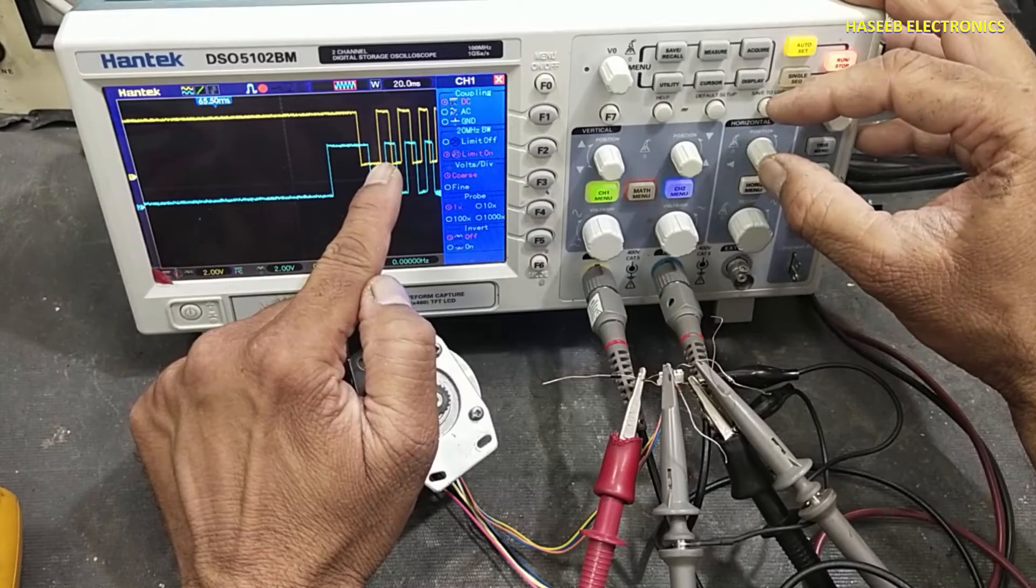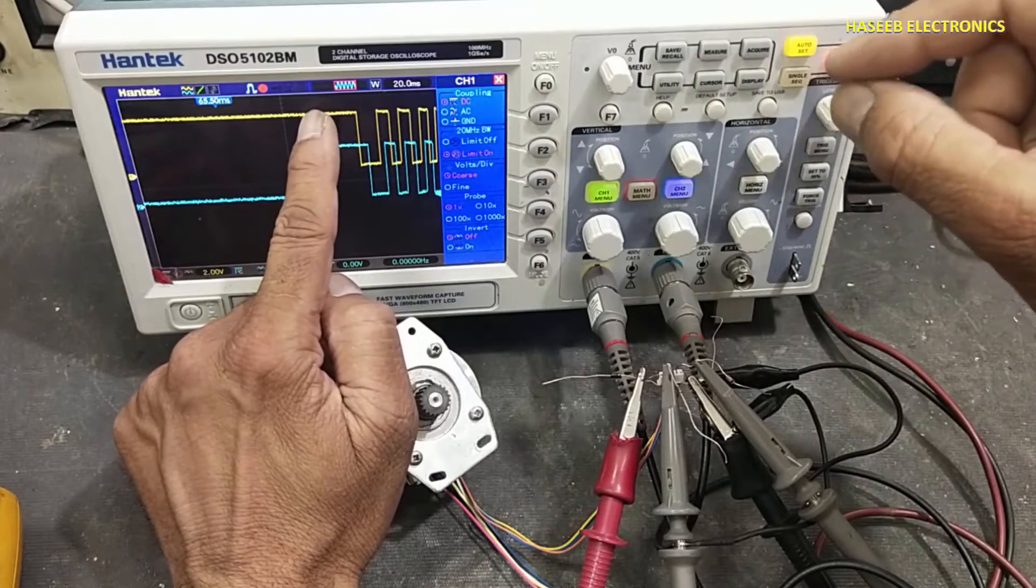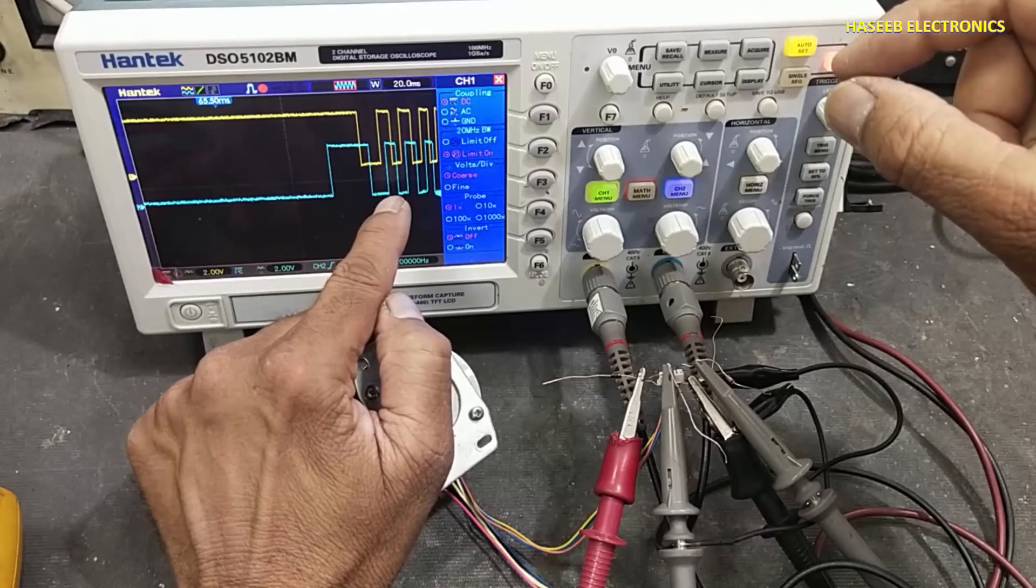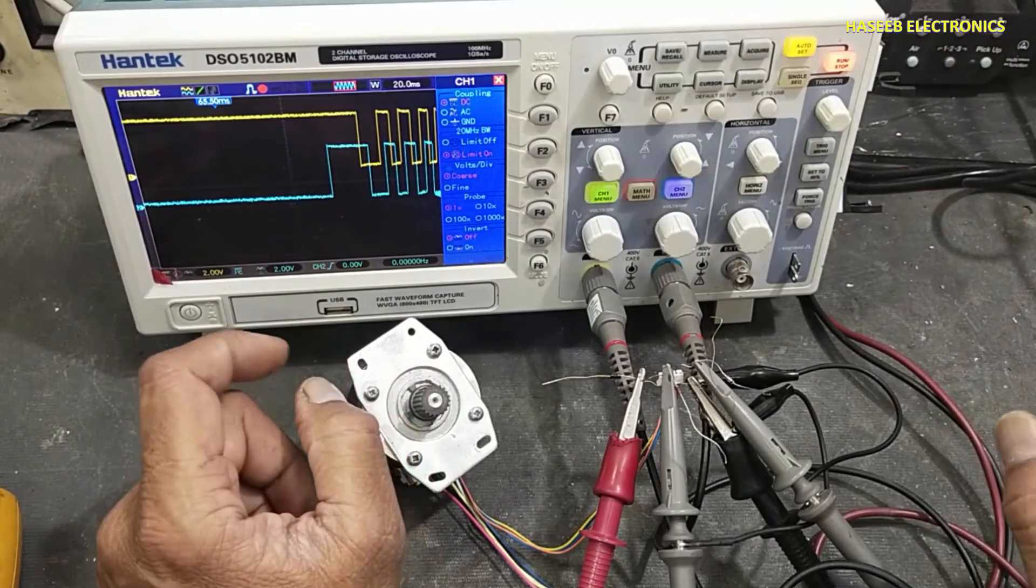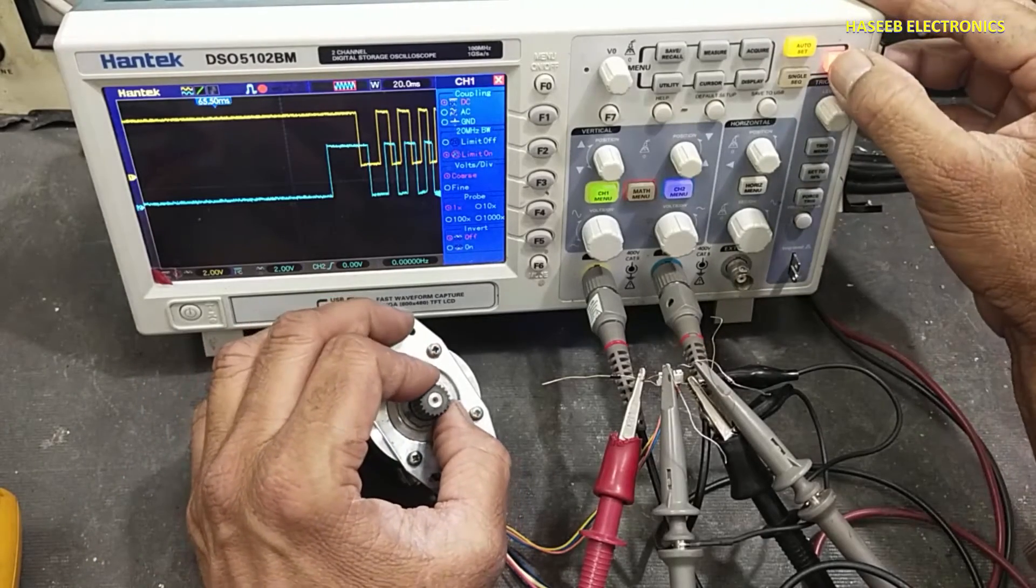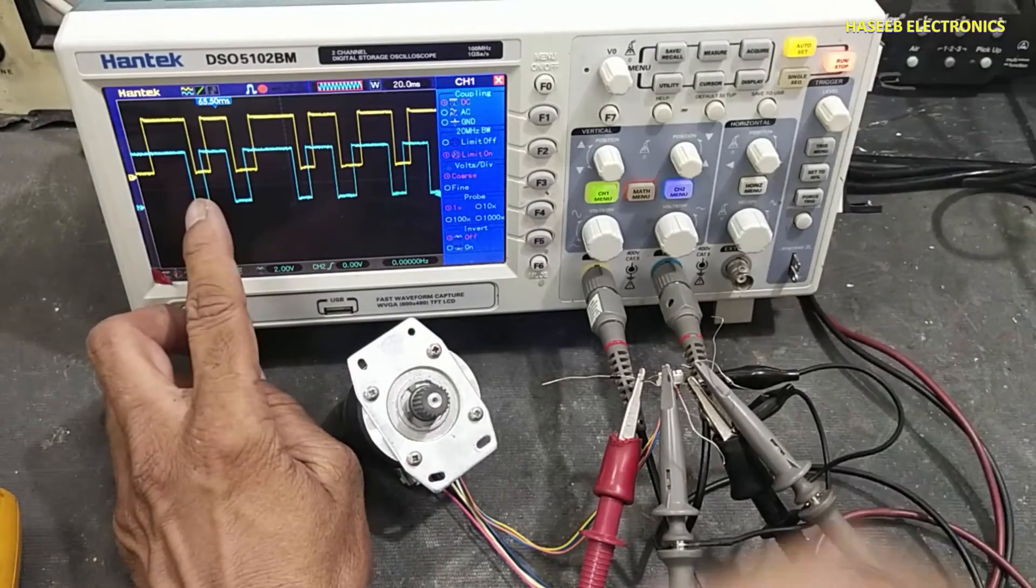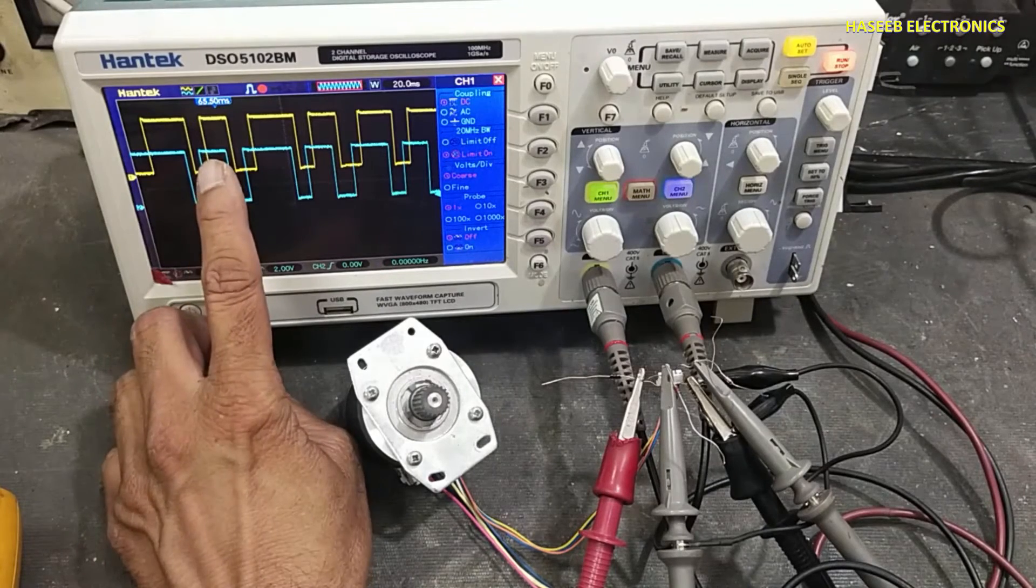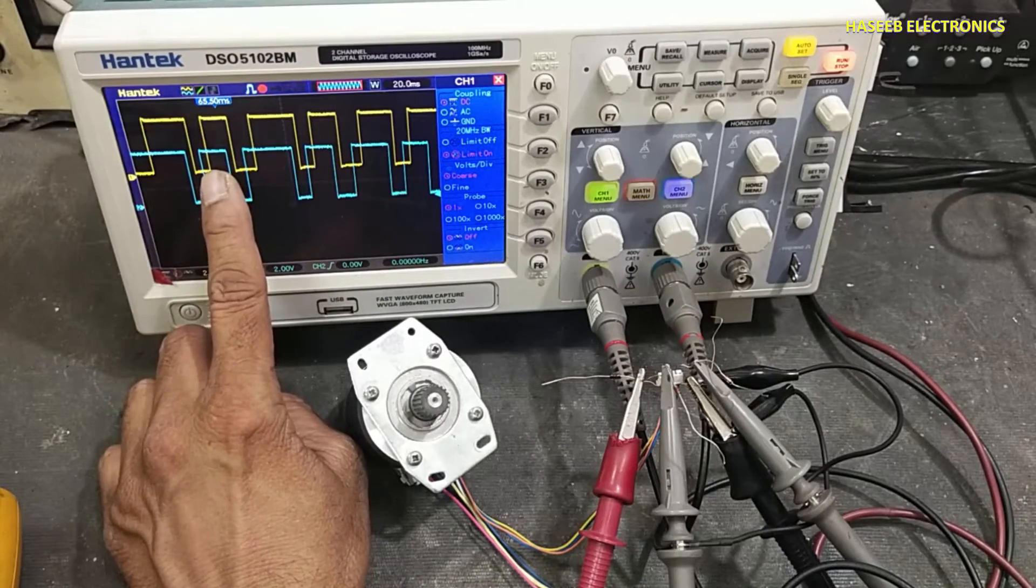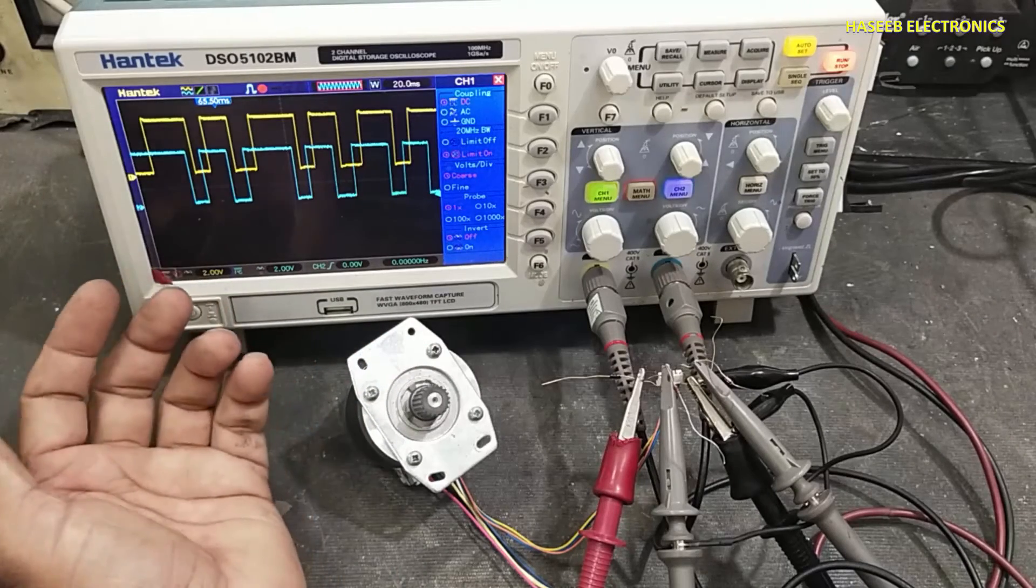This is channel A starting from here. Channel A signal is starting before channel B, that is counterclockwise rotation. If channel B is starting before channel A, that is clockwise, and signal amplitude is five volts.